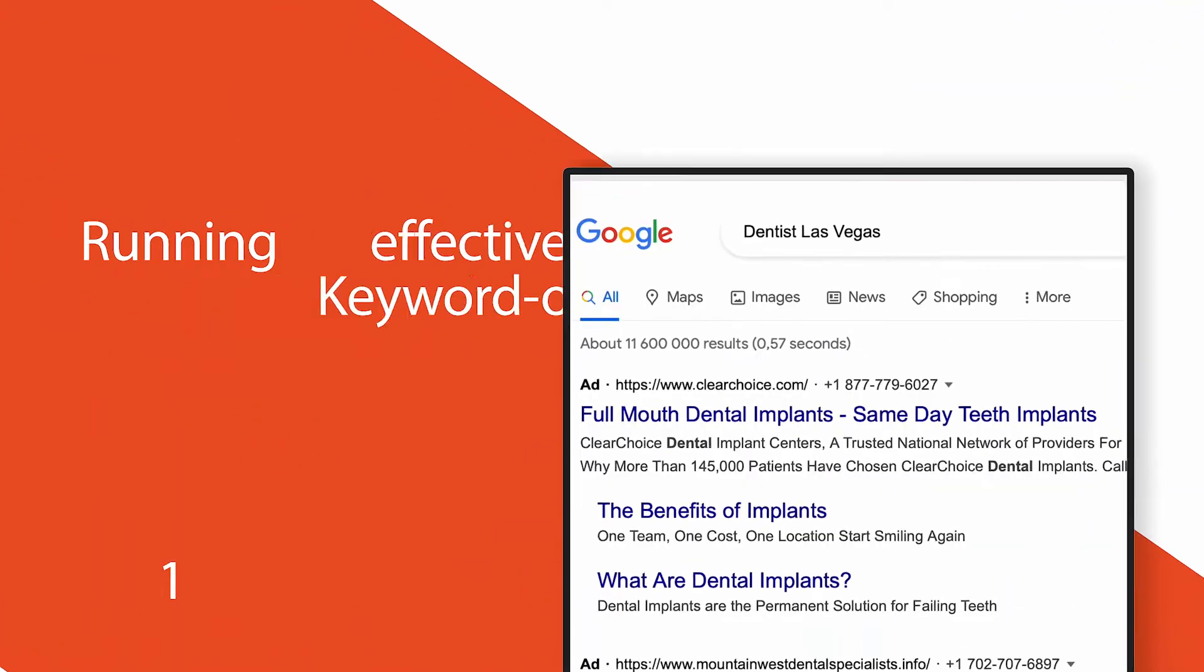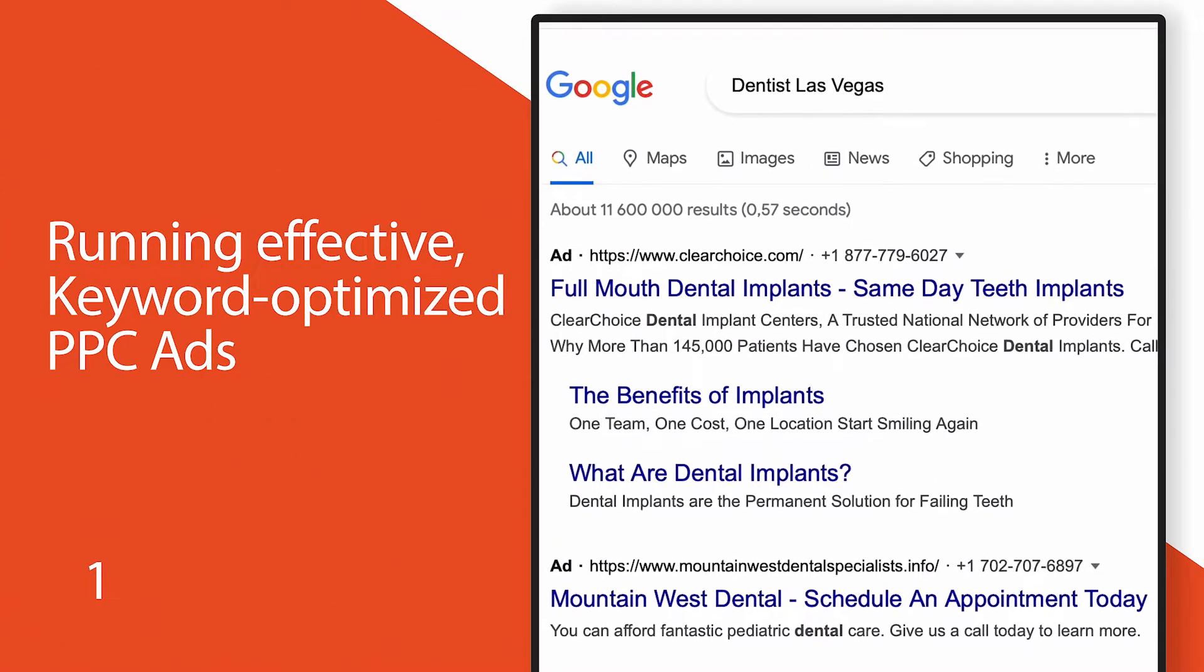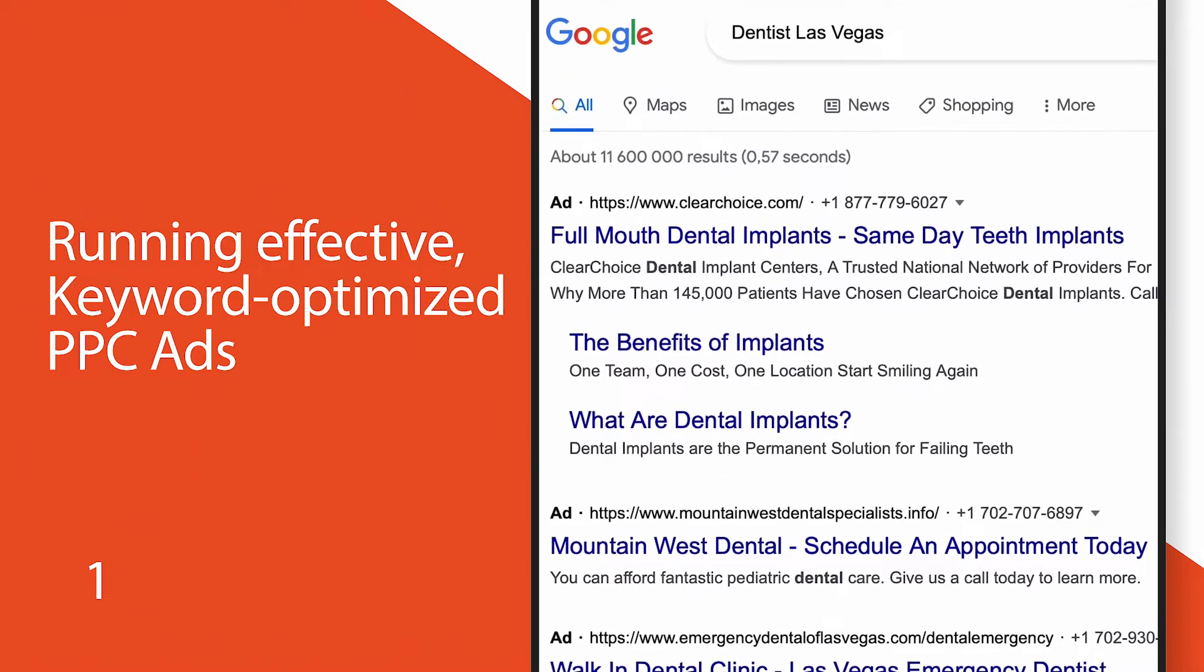But before I tell you how Digital Authority Partners is different from other PPC agencies, let's get a few things out of the way. First, running effective keyword-optimized PPC ads is the most effective way to quickly generate sales for your business.